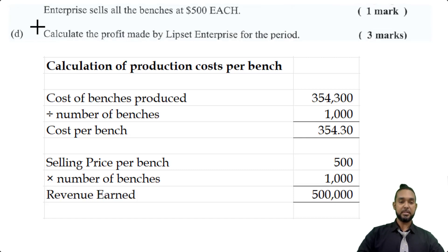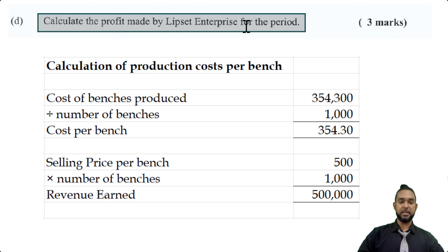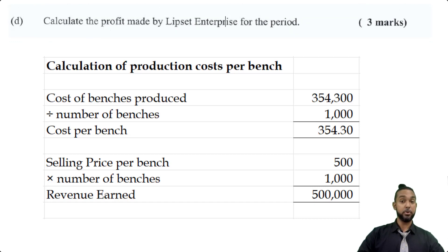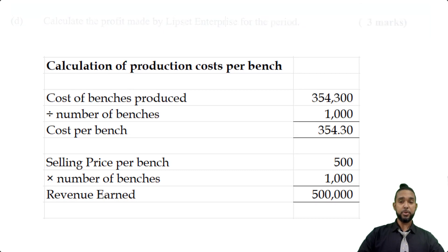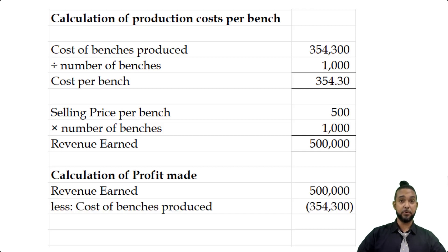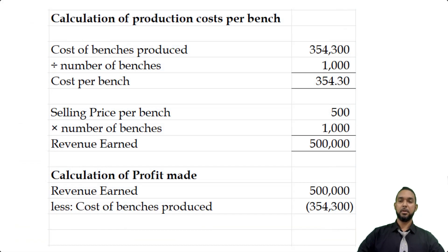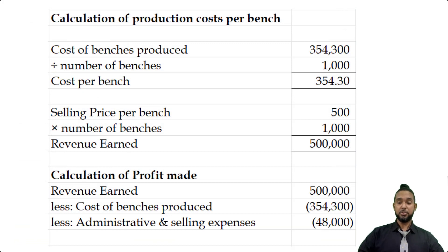Part D asks us to calculate the profit made by Lipset Enterprise for the period. We take revenue of $500,000, subtract the cost of making the benches — $354,300 — and also subtract the admin and selling expenses of $48,000. When we do the arithmetic, we end up with a profit of $97,700.